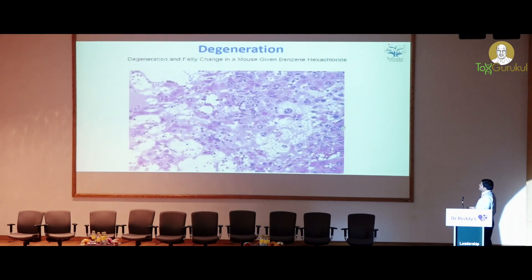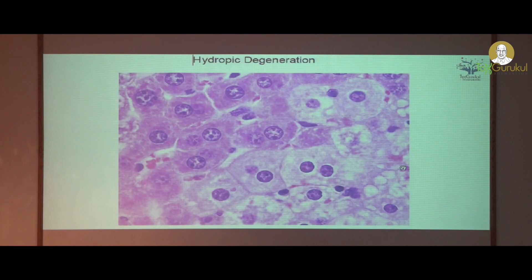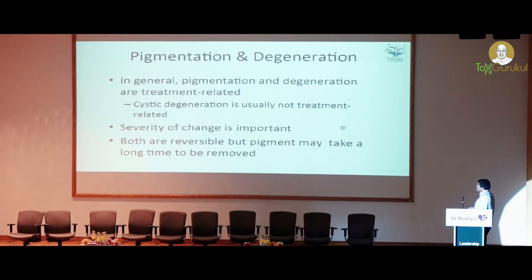Coming to degeneration, the commonly seen types are hydropic degeneration and fatty degeneration — though the current preferred terminology is fatty change or vacuolation. You can see microvesicular fatty change here, but also degeneration where ballooning of the cytoplasm is occurring. Here also you can see ballooning of the hepatocyte cytoplasm. This is another photograph showing hydropic degeneration with ballooning of the cytoplasm. In general, pigment and degeneration are treatment-related, whereas cystic degeneration is normally a background lesion in rodents. Degeneration is a reversible change.